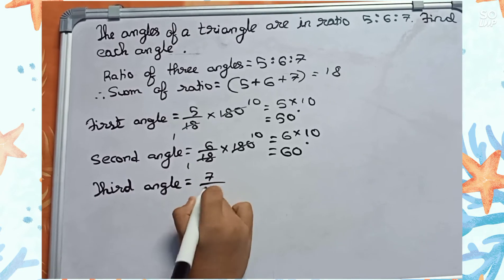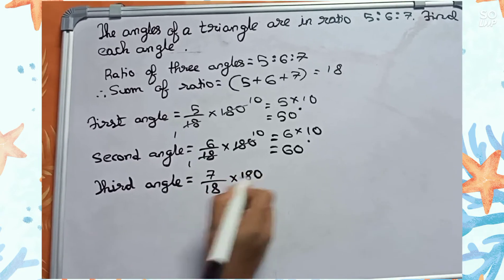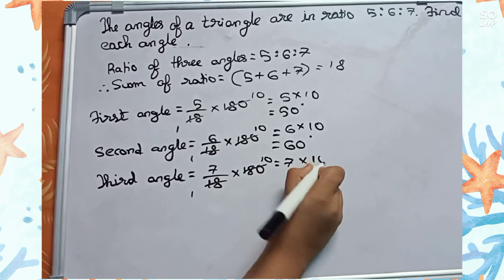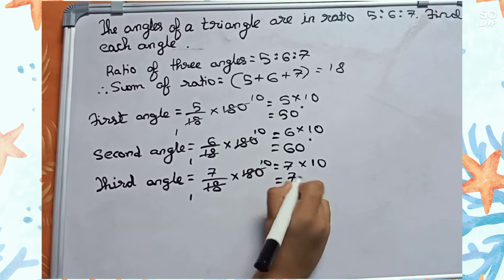Equals 7 by 18 into 180 equals 7 into 10 equals 70 degrees.